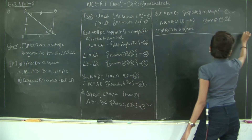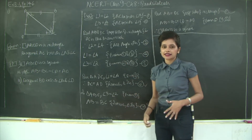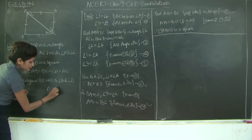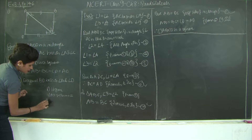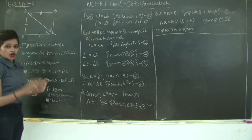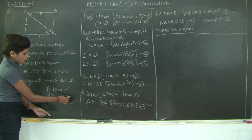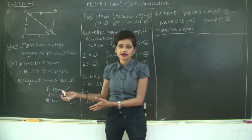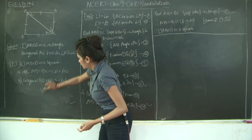To prove a quadrilateral is a square, we normally need to prove: it is a parallelogram, all sides are equal, and each angle is 90 degrees. But since ABCD is given as a rectangle, it is already a parallelogram with all angles 90 degrees by definition. So we only needed to prove that all sides are equal — points 1 and 3 are satisfied by default.